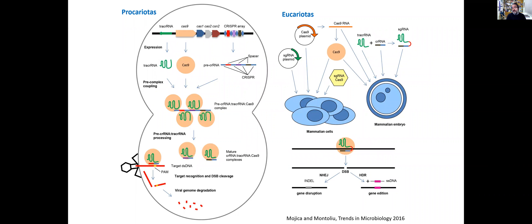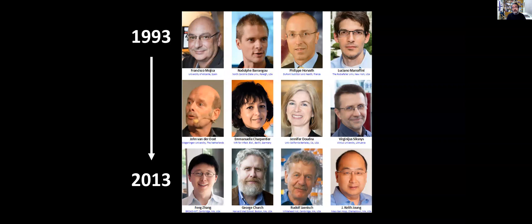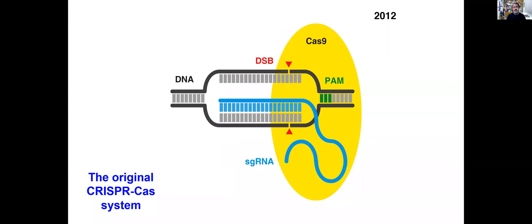This defense system that is operating in prokaryotes can be converted into a genome editing tool in eukaryotes. This is something that has occurred over 20 years of research from 1993, when Francis started characterizing this system using archaea from the salt ponds near Alicante in Santa Pola, to 2013 with these four geneticists: Feng Zhang, George Church, Jennifer Doudna, and David Liu. They confirmed that it could be used as genome editing tools.